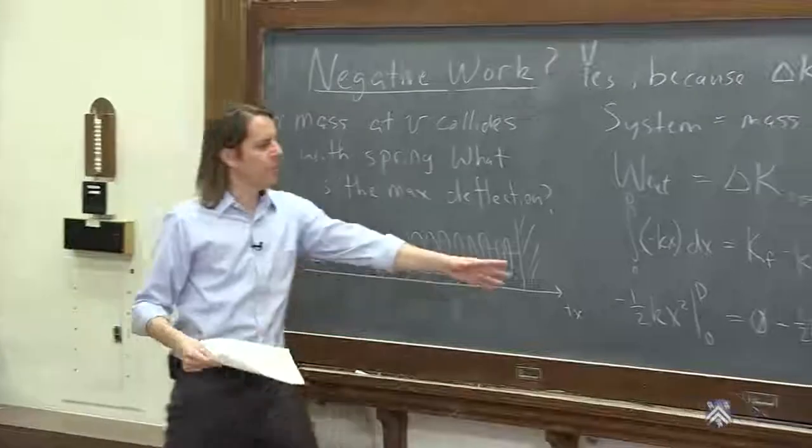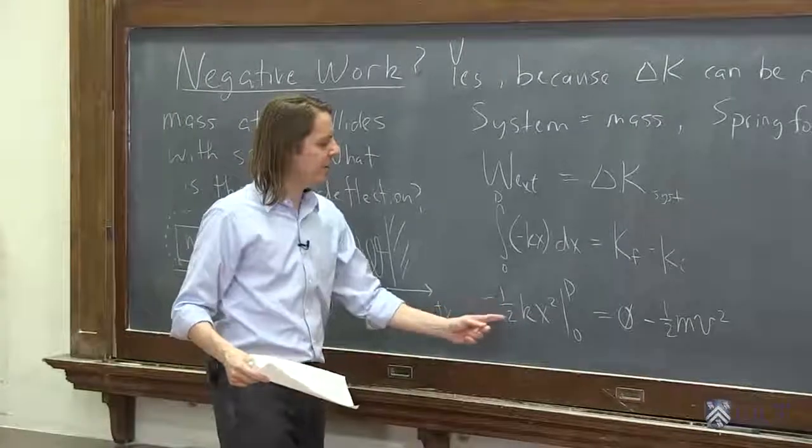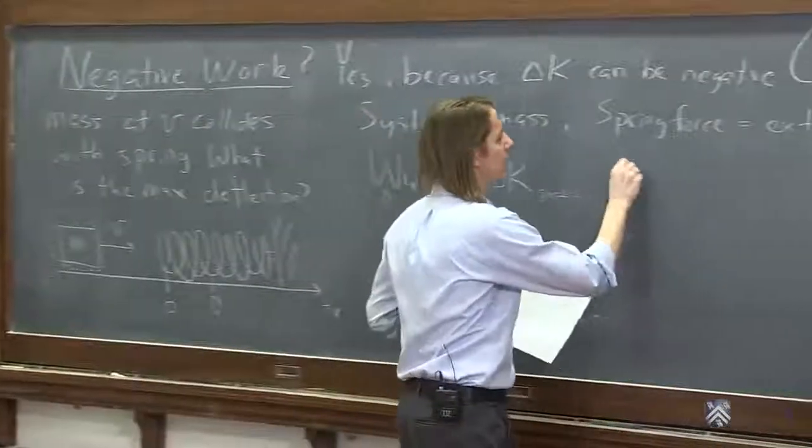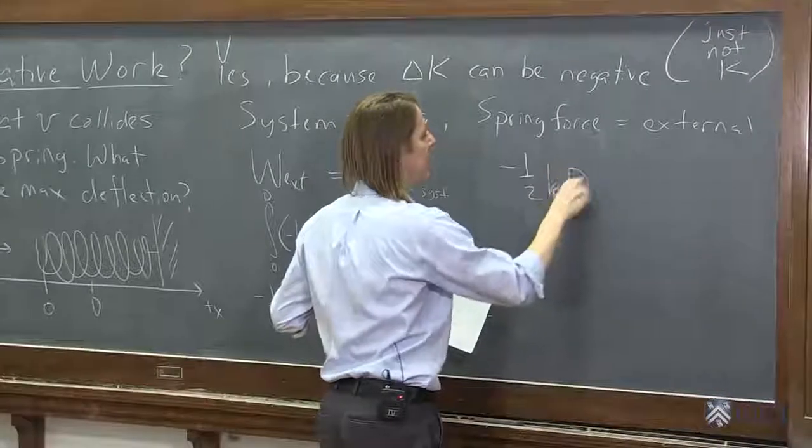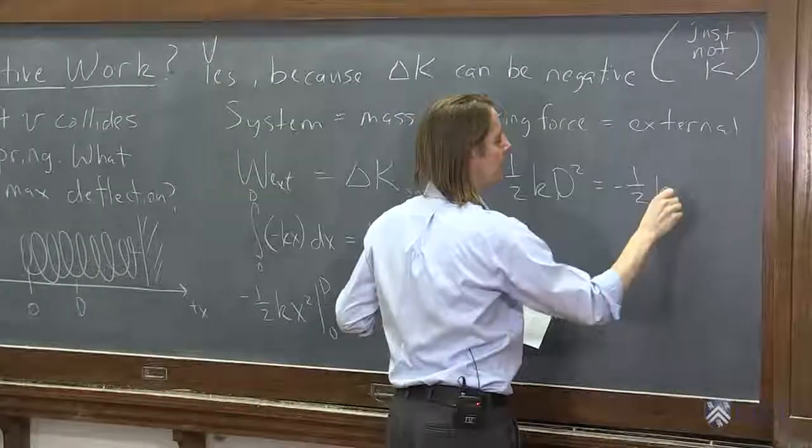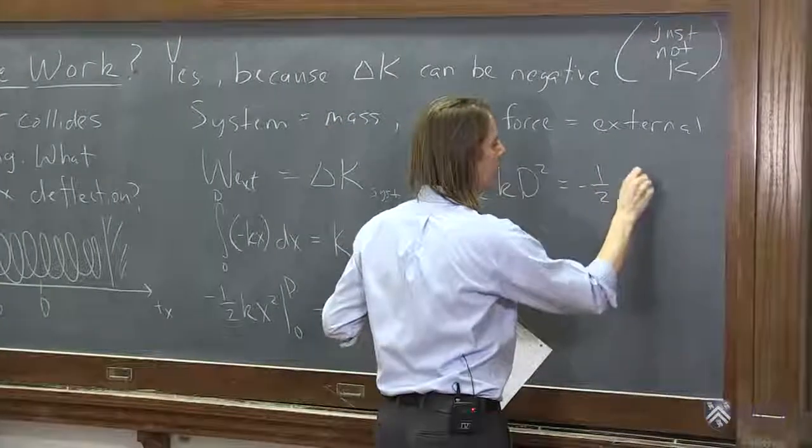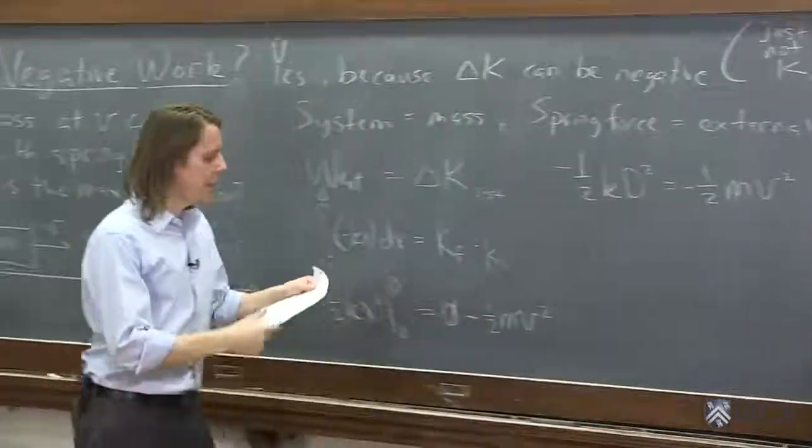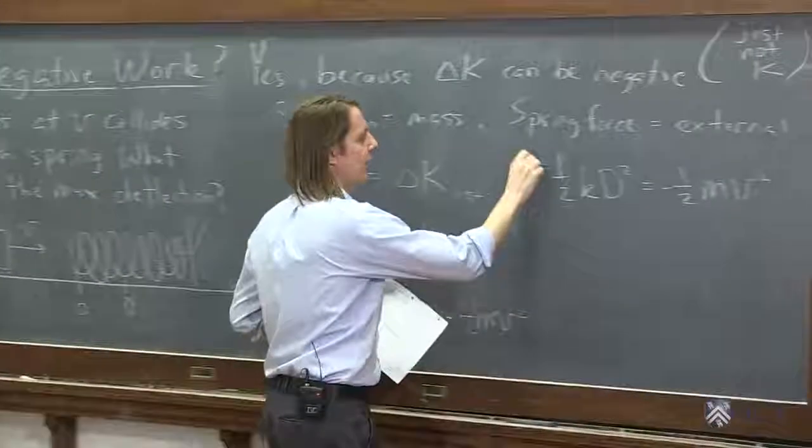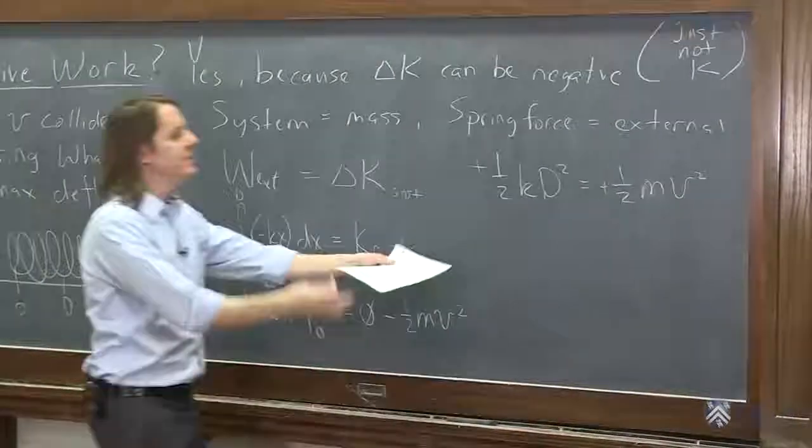All right, so while we evaluate our limits here, this is minus one-half k D squared. Minus one-half k D squared equals minus one-half mv squared. And you can see the minuses become pluses. And you can see it is just that simple idea.